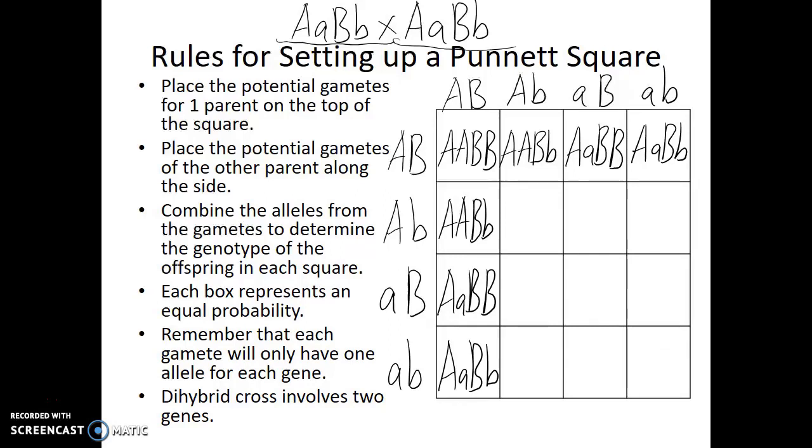There are two more genotypes that I would like to fill in. This is the second row, third column, and the third row, second column. Now one thing I would like you to notice about all nine of these sixteen boxes that we filled in so far, they all have at least one capital A and one capital B. Meaning these offspring will look dominant for both traits because they have at least one capital letter from each gene.